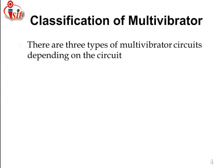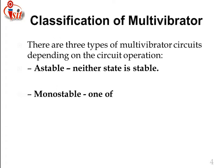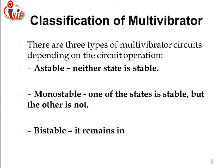Classification of multivibrators is one important thing. There are three types of multivibrator circuits depending upon circuit operation. First is astable — neither state is stable; both states are unstable. Second is monostable — one state is stable but the other is not. Third is bistable — both states remain stable.